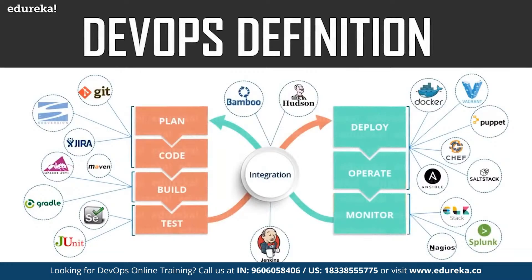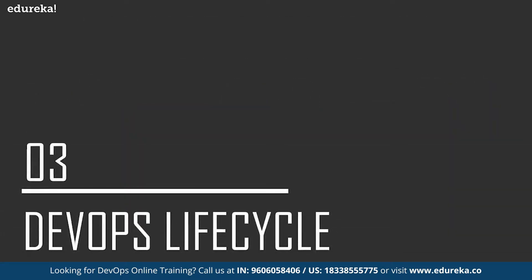The term DevOps is a combination of two words: development and operations. DevOps is a practice that allows a single team to manage the entire application development lifecycle — that is, development, testing, deployment, and operations. It is a software development approach through which superior quality software can be developed quickly and with more reliability. DevOps consists of various stages: continuous development, continuous testing, continuous integration, continuous deployment, and continuous monitoring. The aim of DevOps is to shorten the systems development lifecycle while delivering features, fixes, and updates frequently in close alignment with business objectives. As you can see in this diagram, these are the various tools used in DevOps.